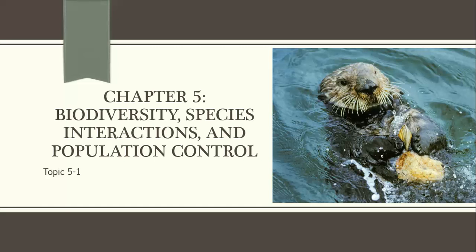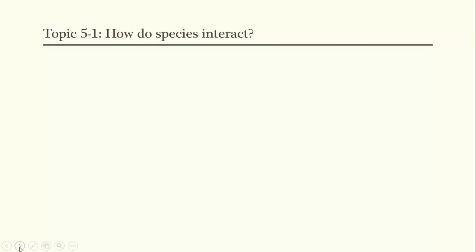A group of organisms of the same species is called a population. When populations of different species occupy the same geographic area, they form a community. Every species within a community has an ecological niche, which is the total sum of a species' use of the living and non-living resources in its environment. When we talk about species interactions, biodiversity and population control both come into play.